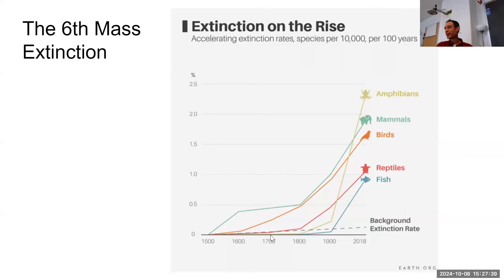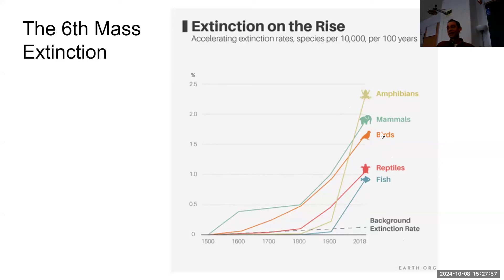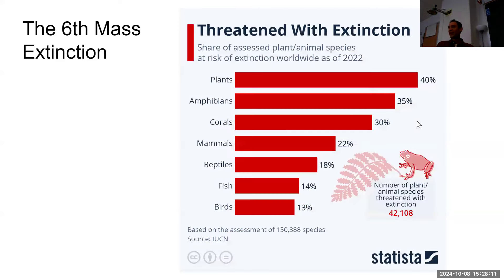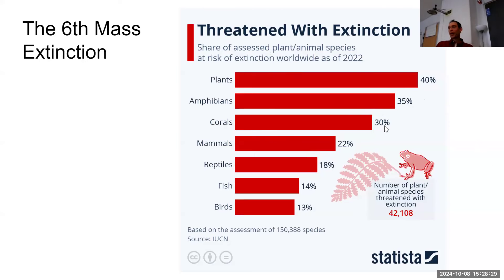A few stats on the sixth mass extinction: since around 1900 and the industrial revolution, as human population expanded and pollution increased, extinction rates really started to spike. Amphibians, mammals, and birds have the highest extinction rates. Amphibians are particularly sensitive because they absorb substances through their skin, so pollution can easily push them outside their range of tolerance. Species currently threatened with extinction include 40% of plants, 35% of amphibians, 30% of corals, and 22% of mammals. Extinction rates are extremely high and accelerating — and uniquely, this mass extinction is being caused by a single organism: the human being.